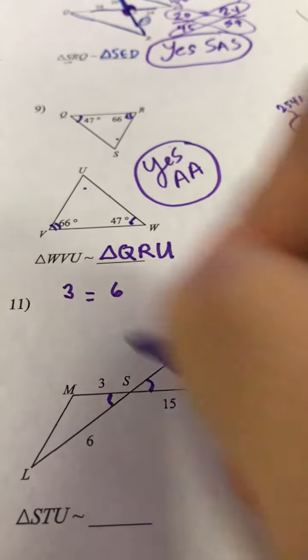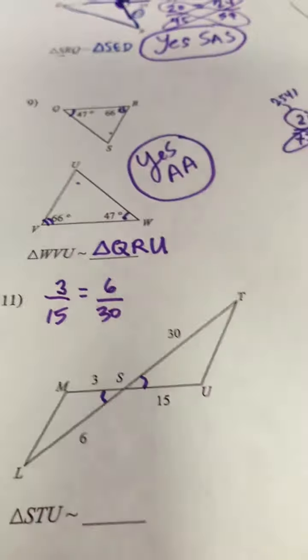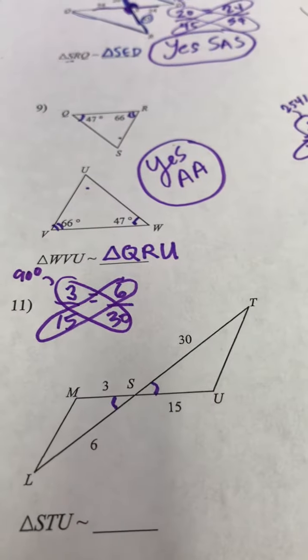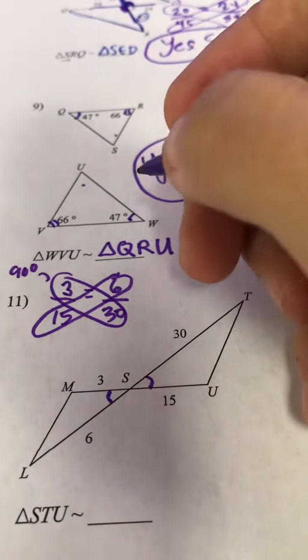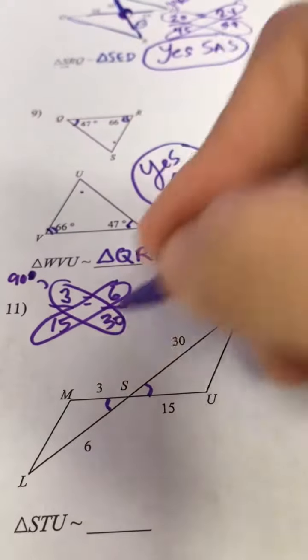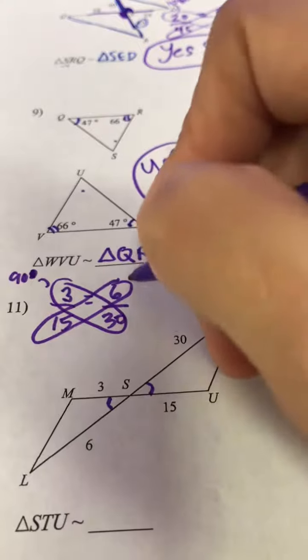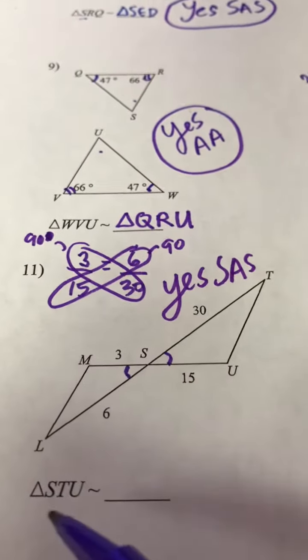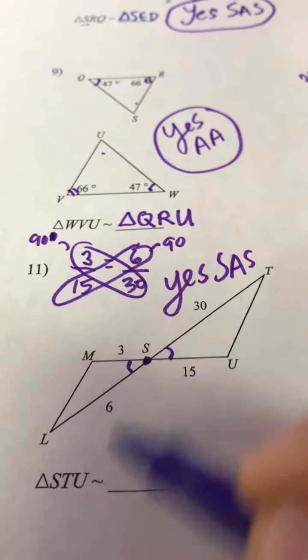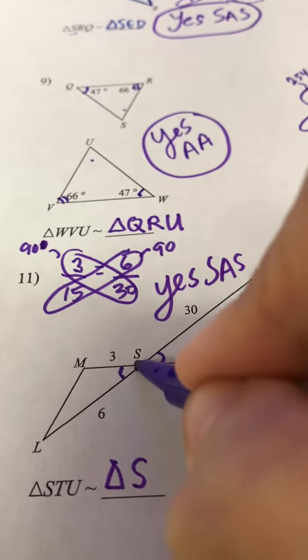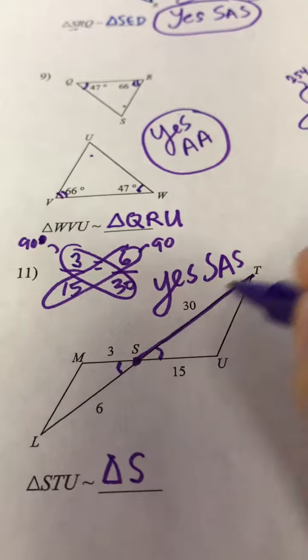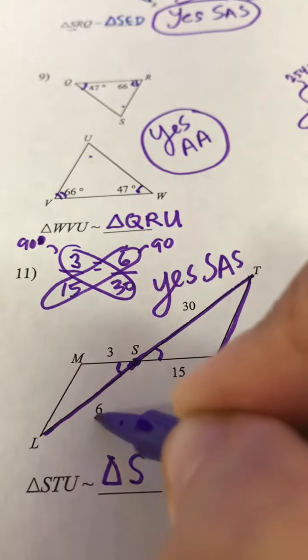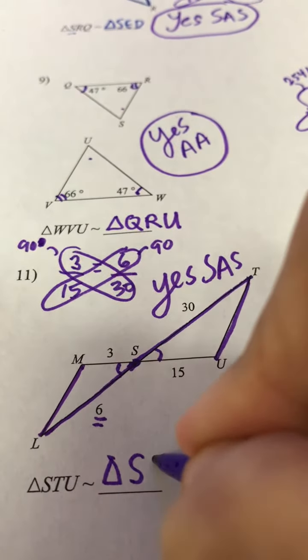If their cross products are equal, we've confirmed they make the same ratio. So that would be 90. 30 times 3 is 90. 15 times 6 is also 90. So this will be yes because of side, angle, side similarity. And let's name this bad boy. So S is the angle we have in common. So I'm going to start with S. Then they went across the big side of mom, and then the side we don't know about. So we're going to do the same thing here. Across the big side of baby is the number 6, and the side we don't know about. So SLM.